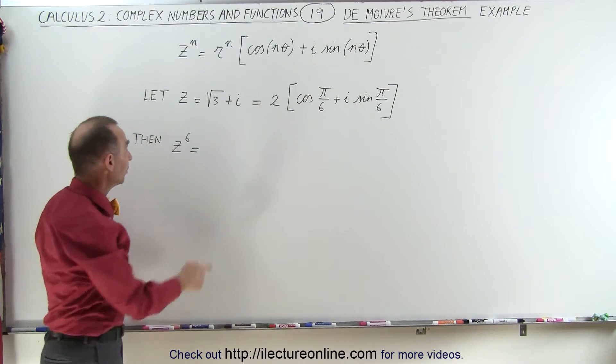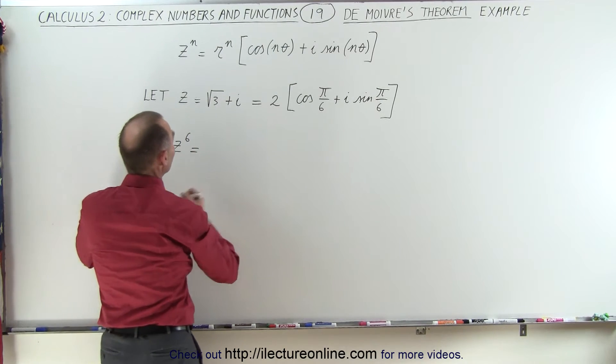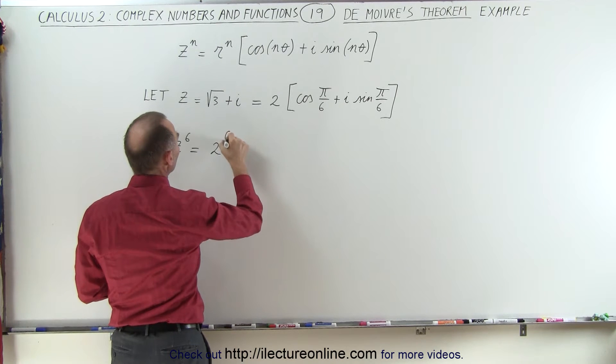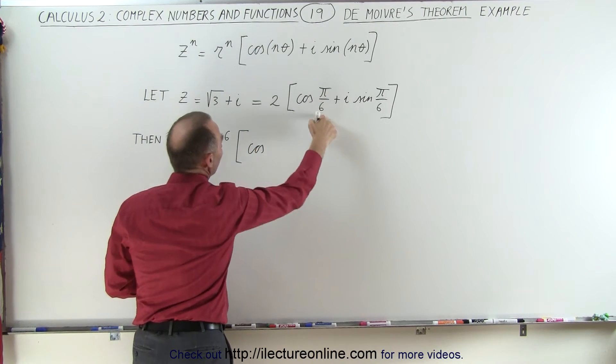So, as an example, z to the sixth, if z is equal to this, we can then say that's equal to 2 to the sixth power times the cosine of n times pi over 6.